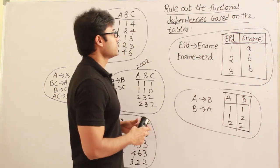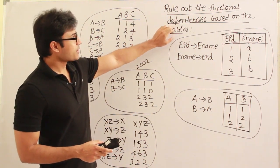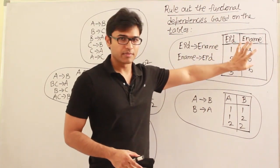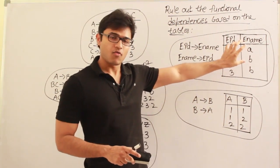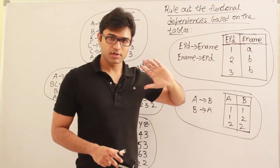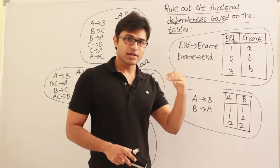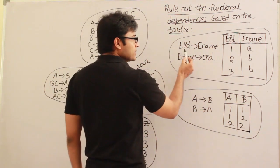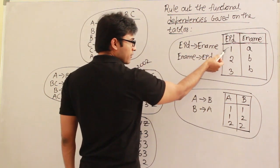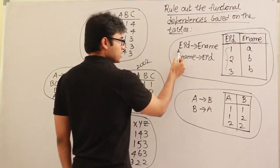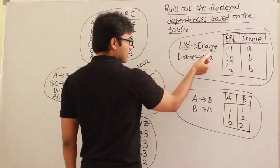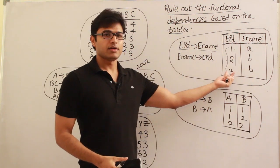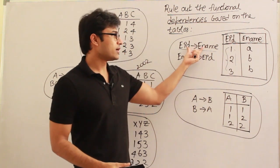Let's take examples — it will be clear. The rule is: given this table, if it is allowed by the DBMS software, what are the functional dependencies you can rule out, and what are the functional dependencies you might have to leave for further examination? Let's see: EID determines EName — is it right or wrong? Looking at these three entries, EID is always unique.